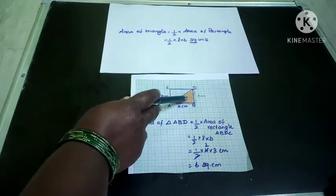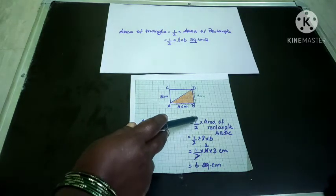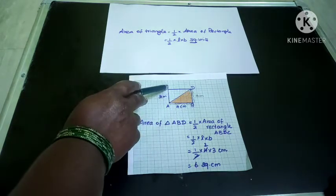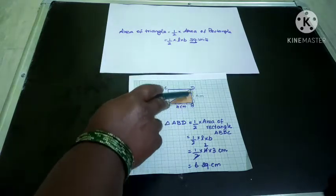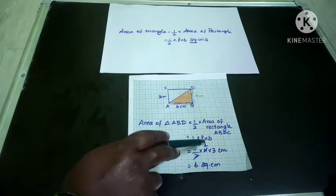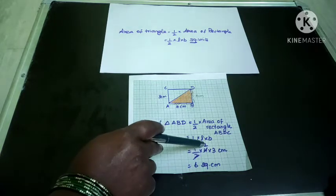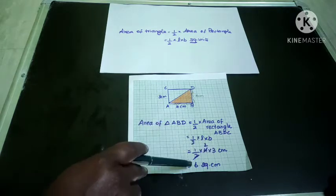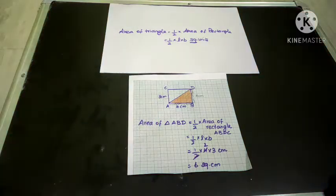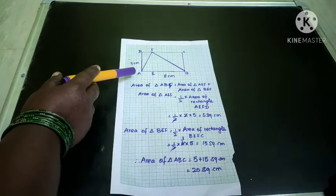Area of triangle ABD is equal to half of area of rectangle ABDC. From the rectangle we got this triangle, so it is half into L into B. Length is 4 and breadth is 3. Half into 4 into 3 — cancel 2 and 4 to get 2, then 2 into 3 equals 6. So the area of this triangle is 6 square centimeters.